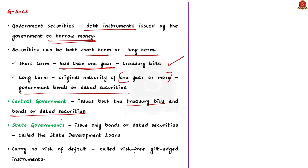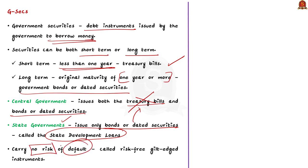Bonds issued by state governments are also called State Development Loans, SDL. Government securities in general are safe instruments — they carry no risk of default since they are issued by the government itself. So investors who want to invest in safe instruments usually go for government securities. Since government securities have no risk of default, they are also called risk-free, gilt-edged instruments.